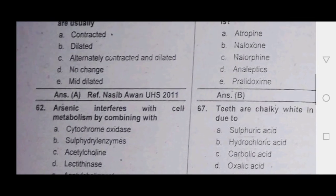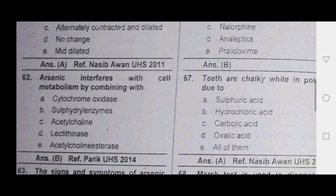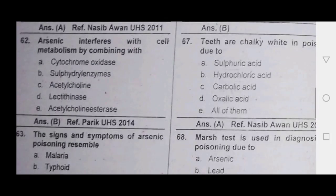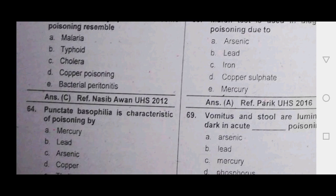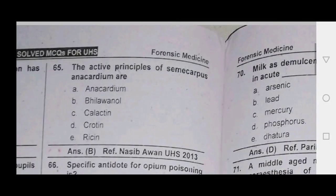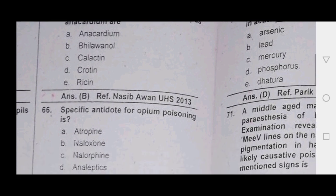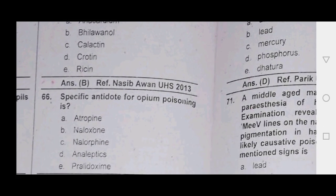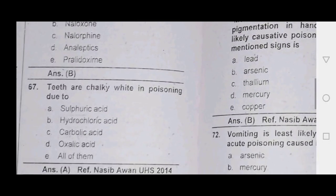Oxalic acid and carbolic acid — which can be said to be corrosive, that's why it is an open point. Arsenic interferes with cellular enzyme — it inactivates it. The symptom of arsenic is punctate basophilia — in lead it is called plumbism.